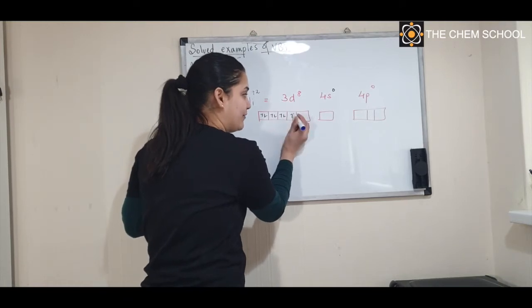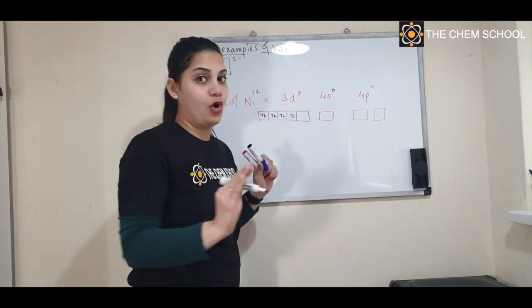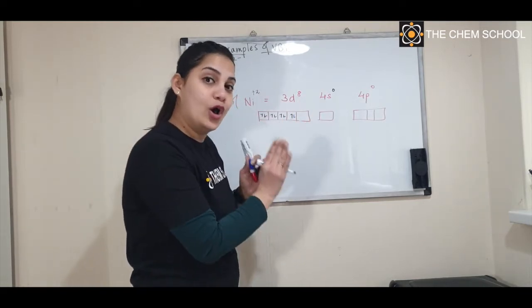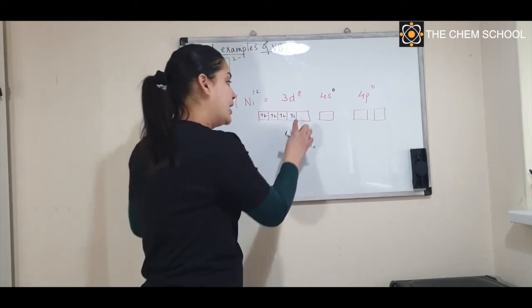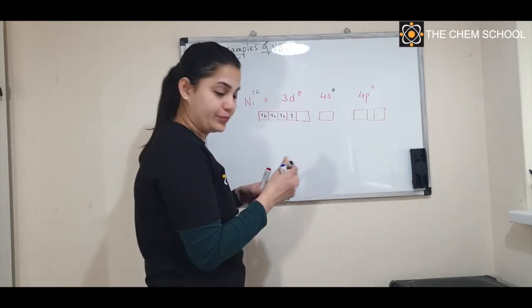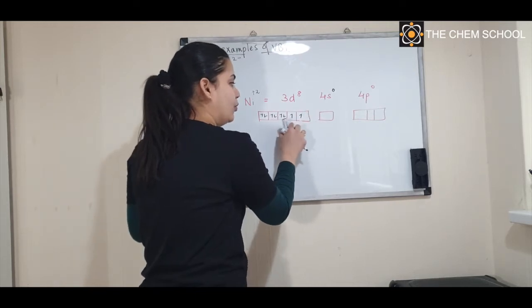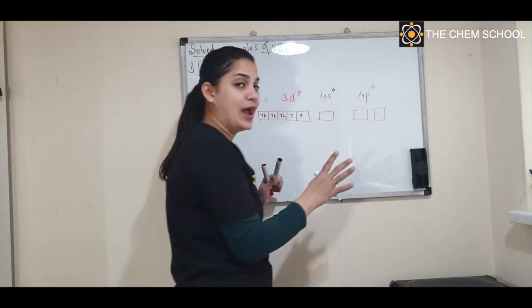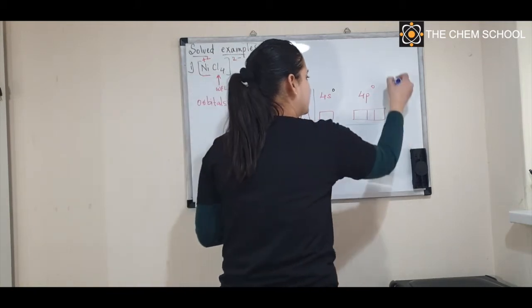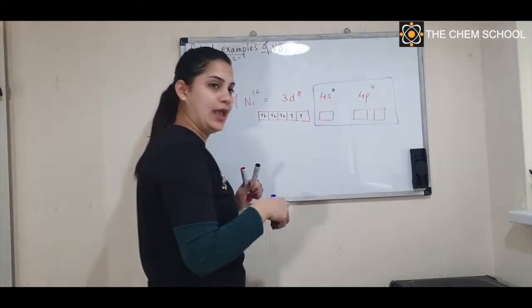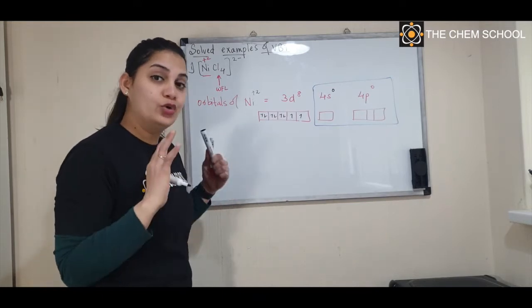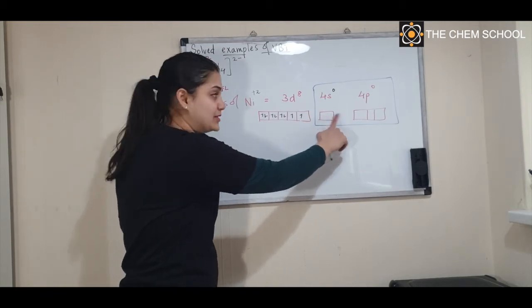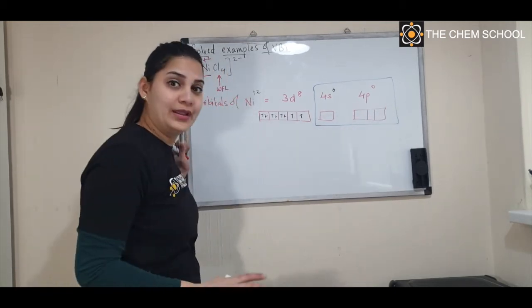If it were a strong field ligand, the electron would shift and you could use that d orbital for hybridization. But because chloride is a weak field ligand, this phenomenon does not occur, so the d orbital here cannot be used. The orbitals available are s and p. They will undergo mixing and recasting — that is hybridization — to give orbitals of equal energy. Since 1 s orbital and 3 p orbitals are mixing, the hybridization is sp³.